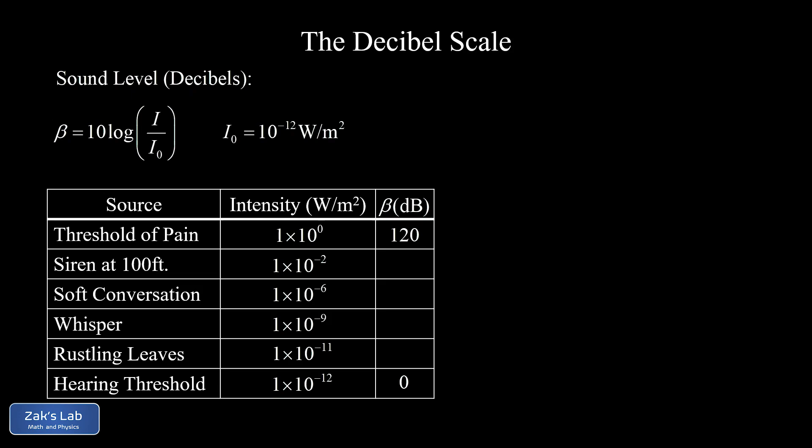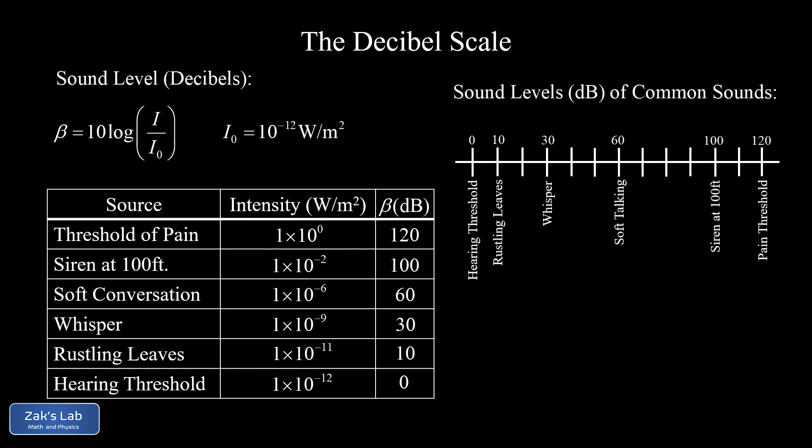Now you can see what I mean by compressing the scale. A range of values that differed by a factor of a trillion now spans from 0 to 120. We can do similar calculations for the rest of the values in the table. With the logarithmic scale showing sound level in decibels, our lowest value is 0, our highest is 120, and we can easily tell the difference between all the values in between — the rustling leaves, the whisper, the soft conversation, a siren at 100 feet — none of them are piled up on the origin anymore.